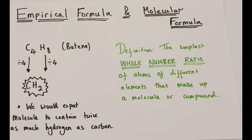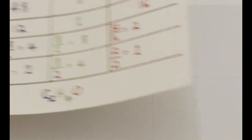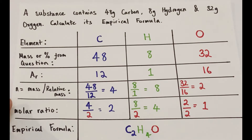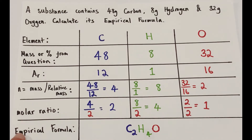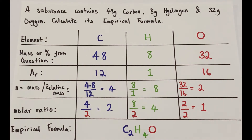So an empirical formula is the simplest whole number ratio of atoms of different elements that make up a molecule or compound. Usually in questions you won't just be asked to give the definition — you'll also be asked to calculate an empirical formula from data. Here's a simple example: a substance contains 48 grams of carbon, 8 grams of hydrogen, and 32 grams of oxygen. Calculate its empirical formula.